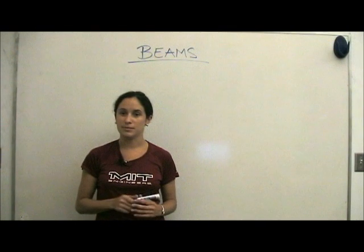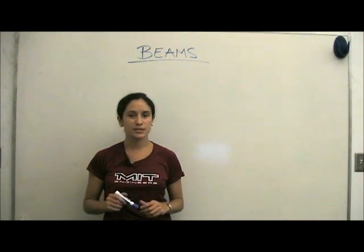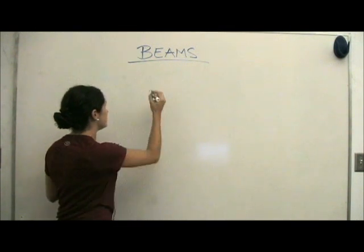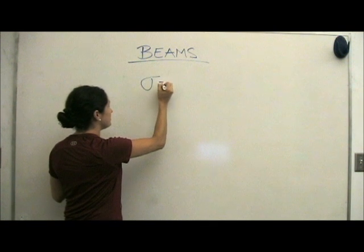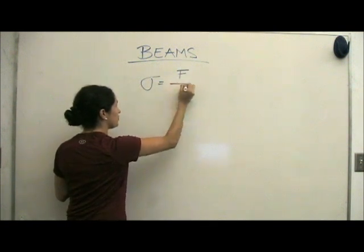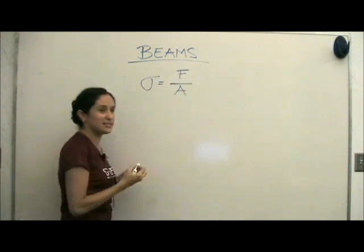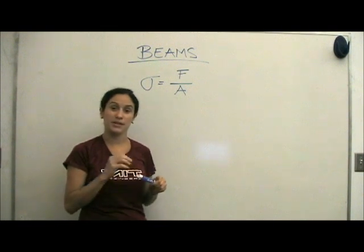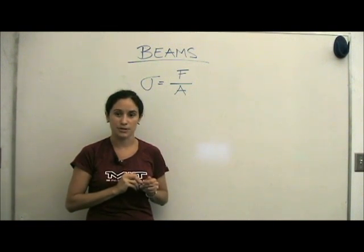So how do we make sure that our beams don't fail like that? First, we need to talk about stress. Stress, denoted sigma, is defined as the force per unit area. This tells us that both the force that you're applying as well as the area that you're applying it over are important.